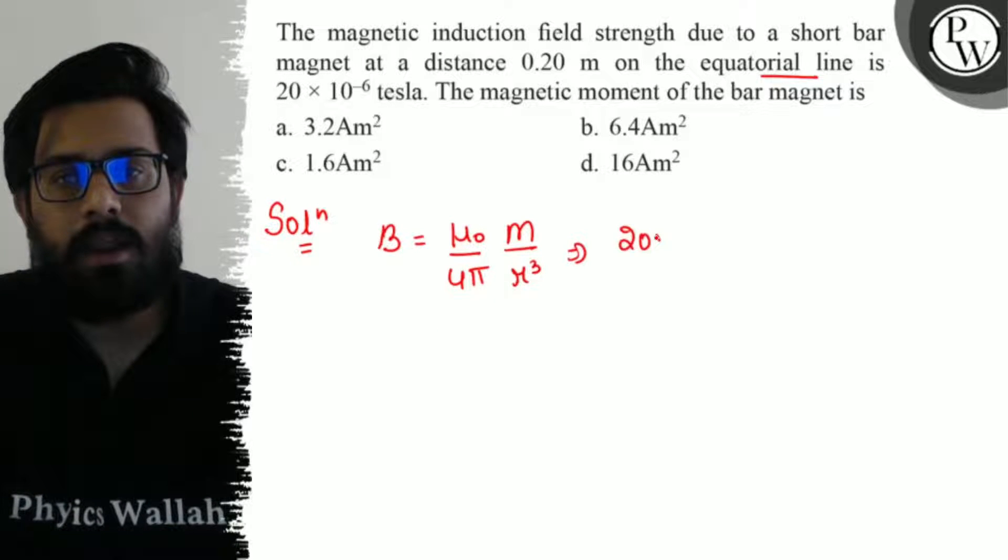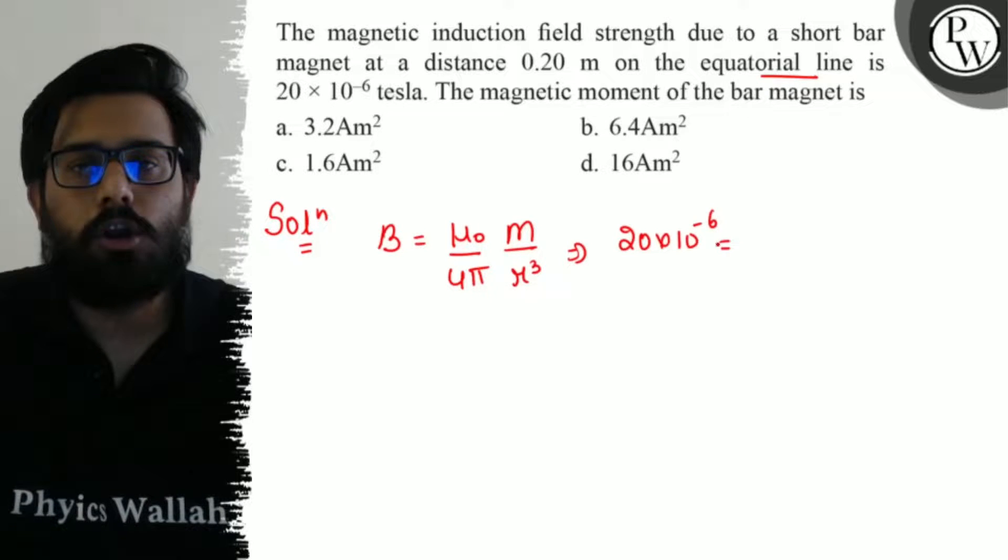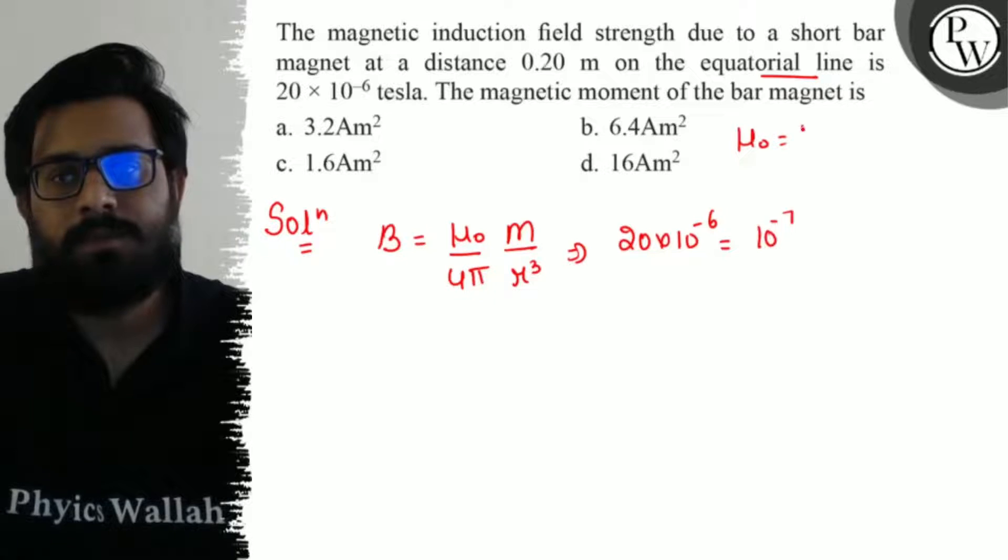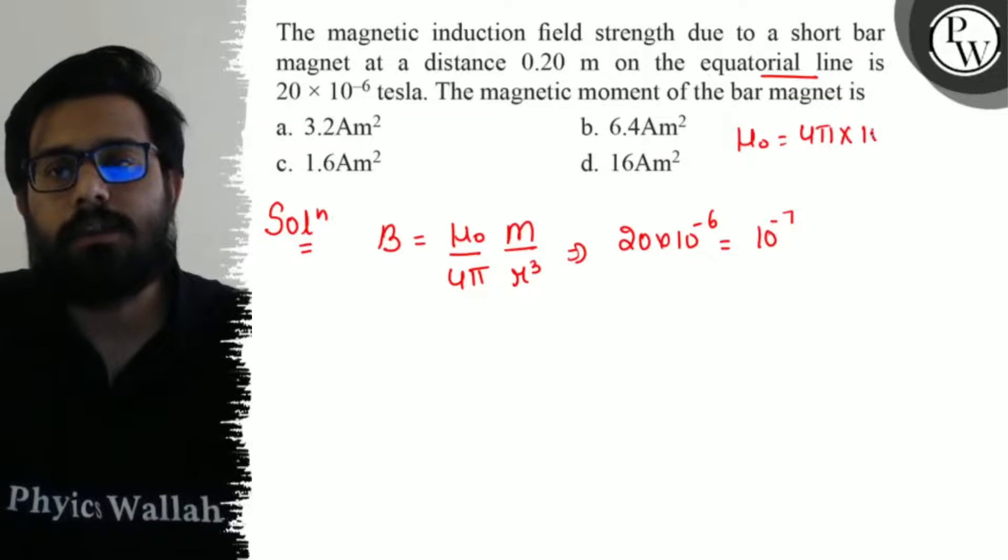20×10^(-6) tesla. μ₀ upon 4π is 10^(-7), since the value of μ₀ is 4π×10^(-7).